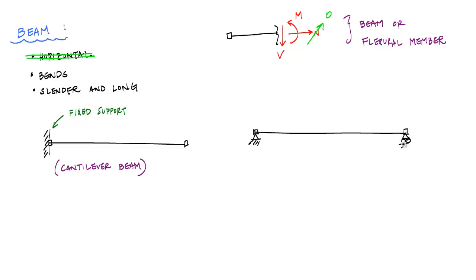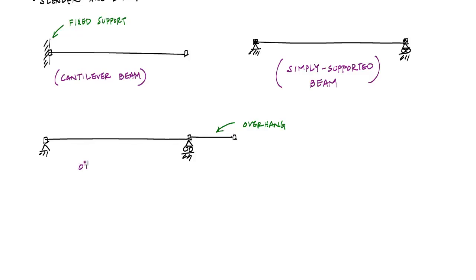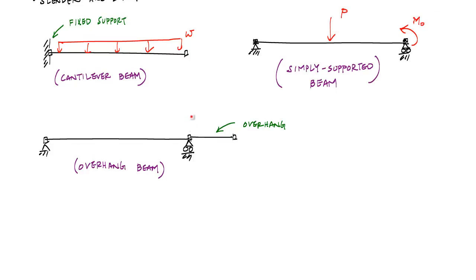You're also probably familiar with a simply supported beam, which has one end pinned and the other with a roller support. Another type is an overhang beam — it looks like a simply supported beam but has a portion hanging over the roller support. The loading on beams is typically transverse, causing bending — examples include distributed loads, point loads, concentrated moments, and linearly distributed loads.